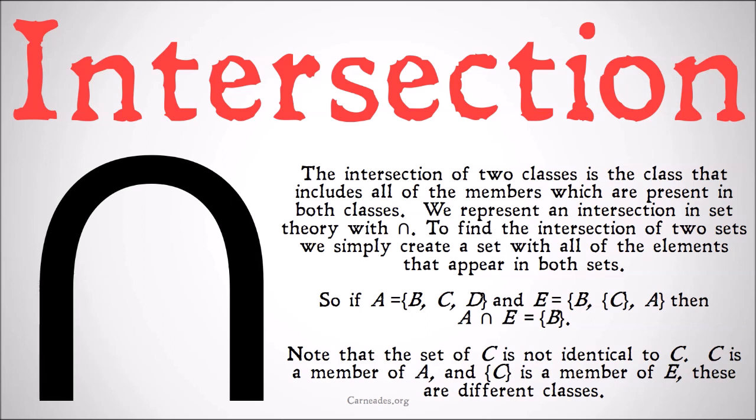So if class A is defined as {B, C, D} and class E is defined as {B, {C}, A}, then the intersection of A and E would be the class {B}, because B is the only member that is in both sets.